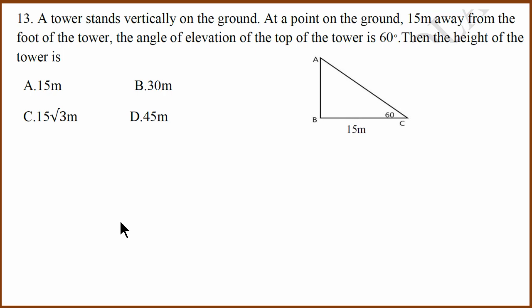13th question is application of trigonometry. This angle here is 60 degrees, the distance is 15 meters, we are supposed to find height AB. It's a tan theta kind of question. You say tan C equals AB, which is opposite side by adjacent side, which is BC. We know BC is 15. If you simplify, you get 15 root 3. Remember tan 60 is root 3.